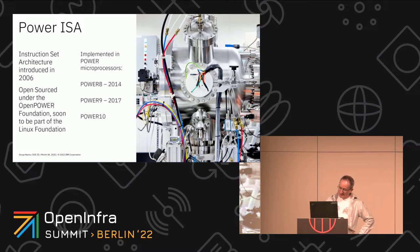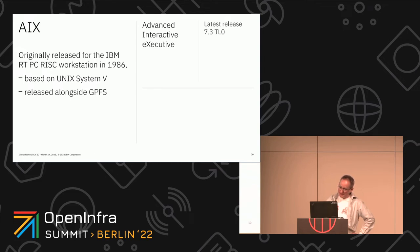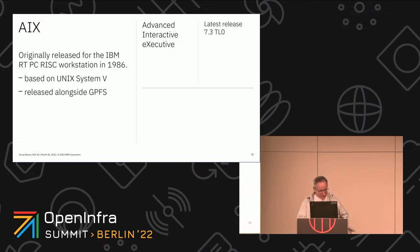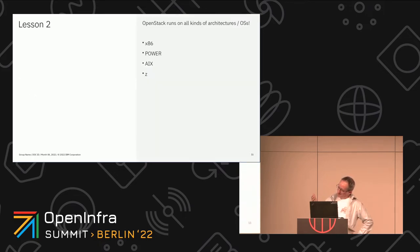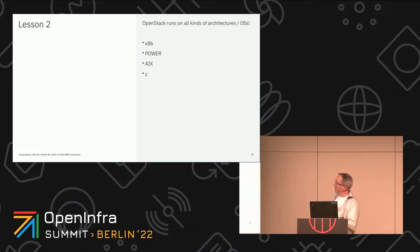One of the reasons we need Power is because we need to test AIX — Advanced Interactive Executive — which is another operating system put out by IBM way back in 1986. It was based on Unix and was released alongside GPFS, the Global Parallel File System, which got renamed to Spectrum Scale, which is where I work and why we still need to support AIX. Our lesson learned is that there are multiple architectures. OpenStack runs on all kinds of stuff: it runs on x86, it works on Power, and I have it on good authority that OpenStack will run on z, IBM's mainframes, too.